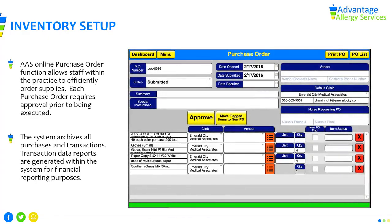The AAS Online Purchase Order function allows staff within the practice to efficiently order supplies. Each purchase order requires approval prior to being executed. The system archives all purchases and transactions. Transaction data reports are generated within the system for financial reporting purposes.